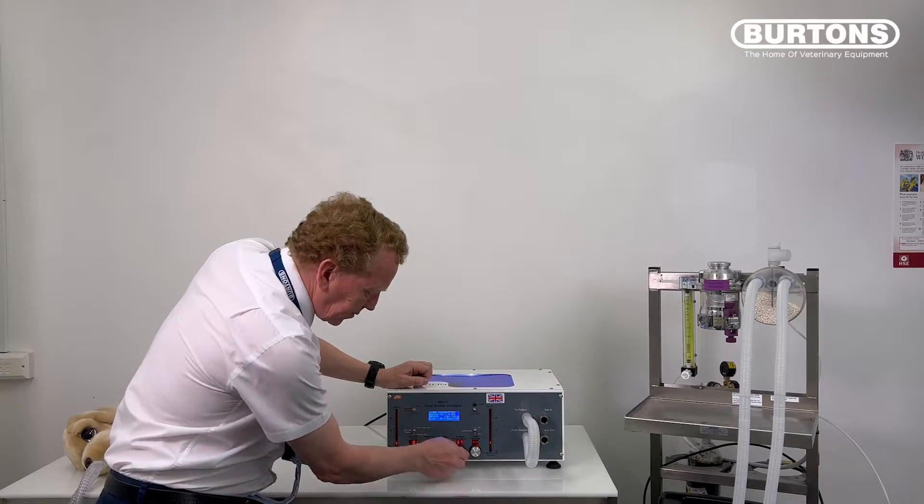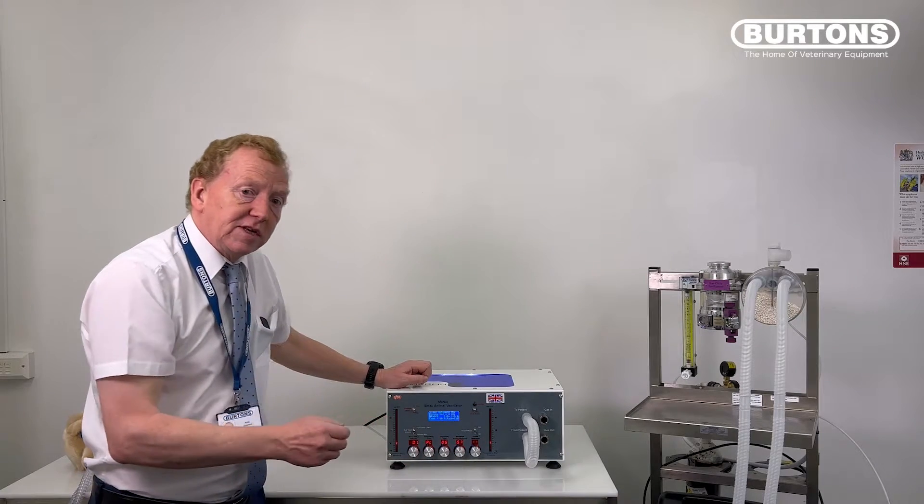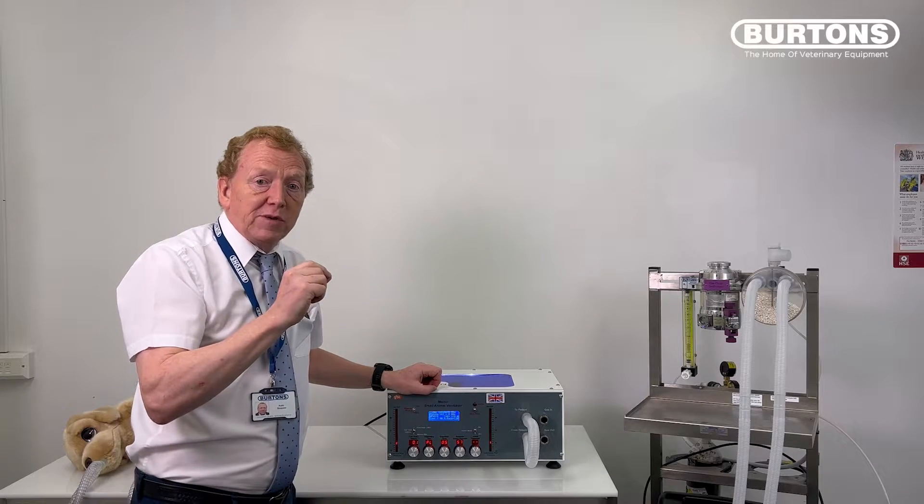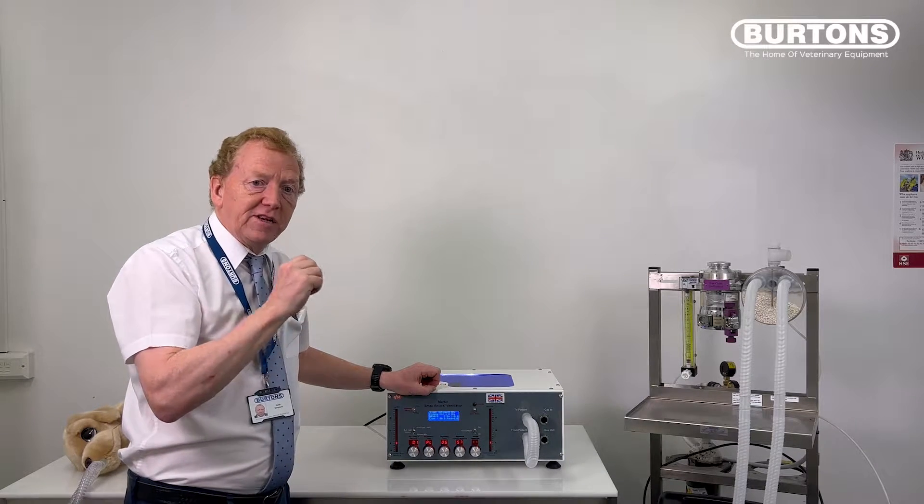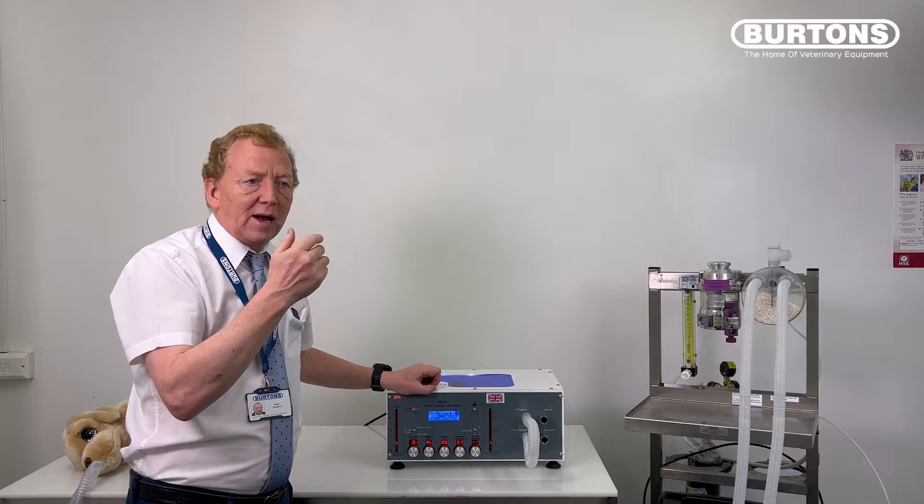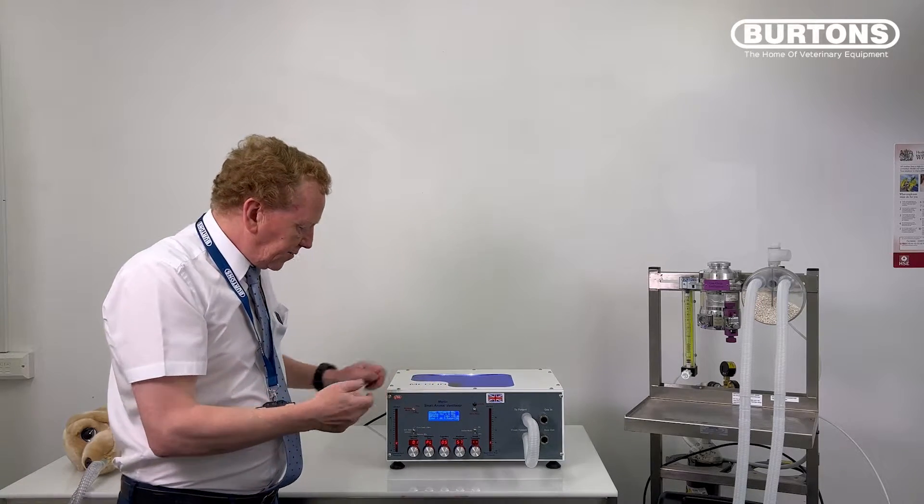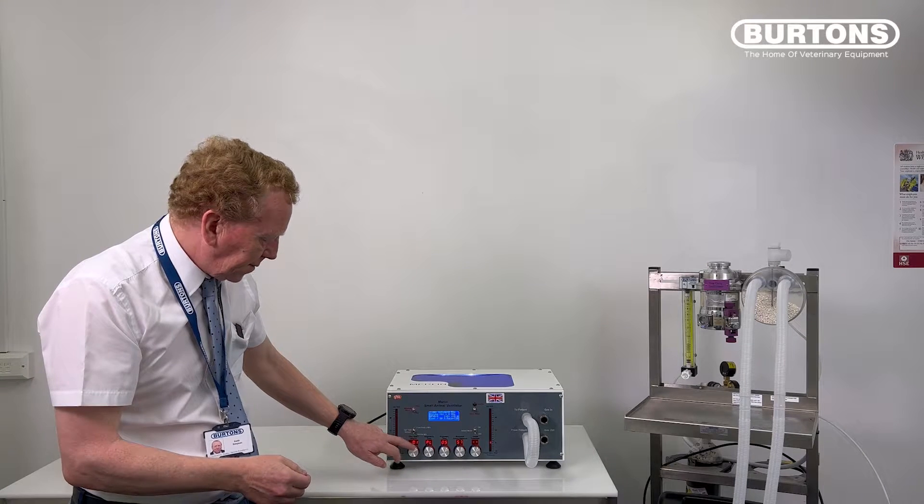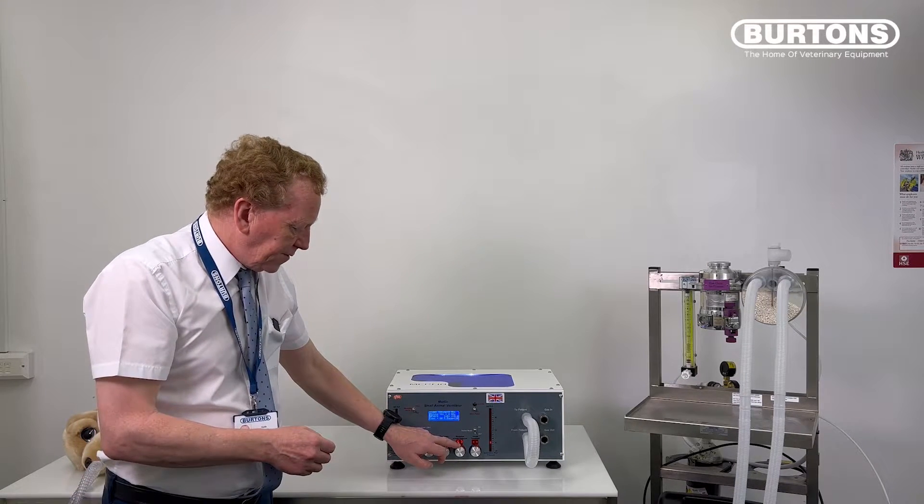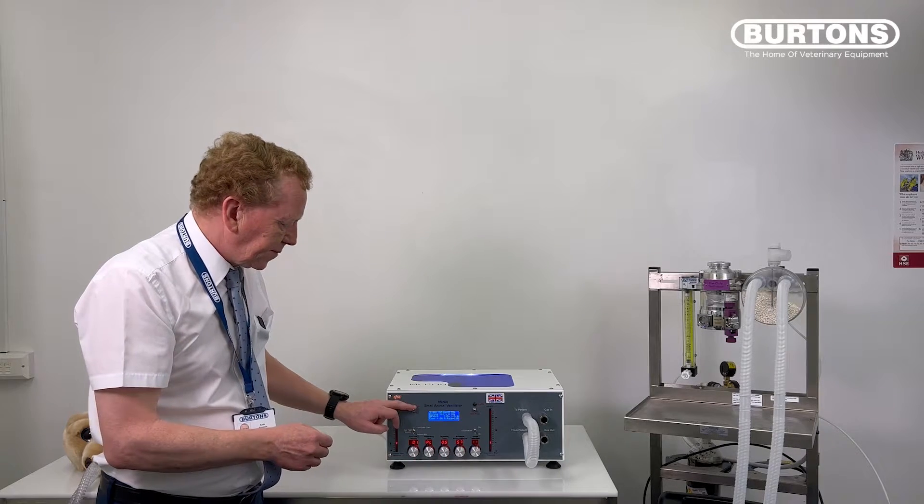We're going to set our maximum pressure now to 57 centimeters of water. So we're putting in just over one mil per second into a blind tube and see if we can get up to 57 centimeters of pressure. If we can, then we've got absolutely no leak whatsoever. It's very simple: set it up 0.1 PL, doesn't matter about the expiratory time, 57 on the maximum pressure, and hit go.